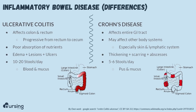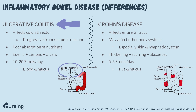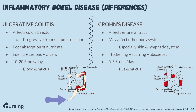The number one difference is that ulcerative colitis only affects the large intestine or the colon. The edema and lesions progress to ulcers and move progressively around the colon from the rectum up the ascending colon, across the transverse colon, and down to the cecum. When these ulcerations begin affecting the mucosal lining, we're going to have a lot of trouble absorbing nutrients, fluids, and water from our food, so we'll see multiple stools a day, especially during a flare-up.